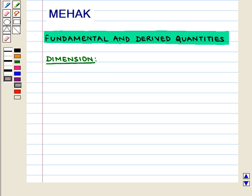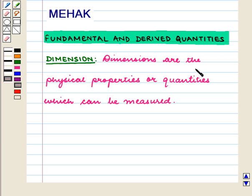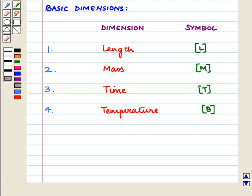Let us start with the definition of dimension. Dimensions are the physical properties or quantities which can be measured. Some of the basic dimensions are length, mass, time, and temperature. The symbol of length is capital L in square brackets, the symbol of mass is capital M in square brackets, the symbol of time is capital T in square brackets, and the symbol of temperature is theta in square brackets.